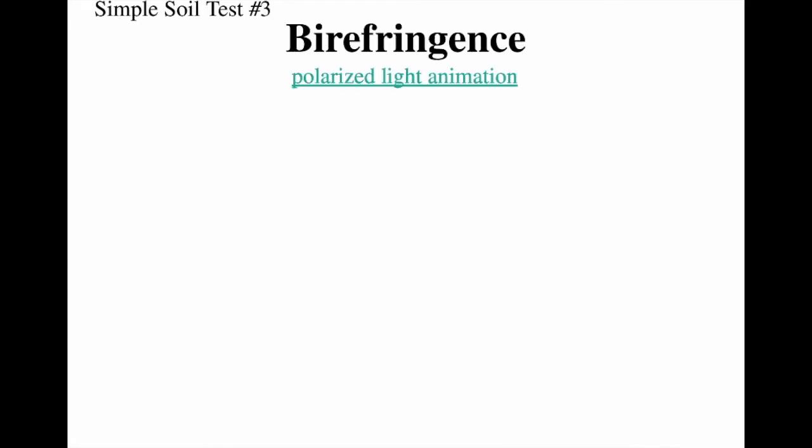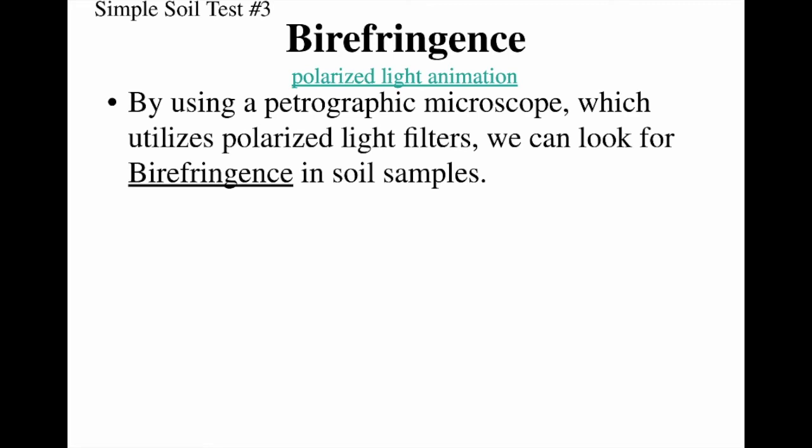Another quick test we can do is called birefringence. In order to check for birefringence, we need a special type of microscope called a petrographic microscope, which uses polarized light filters so that we can look for birefringence in soil samples. In order to understand how this works, we have to talk a little bit about polarized light, so we're going to watch a quick animation so that you can understand what I mean.